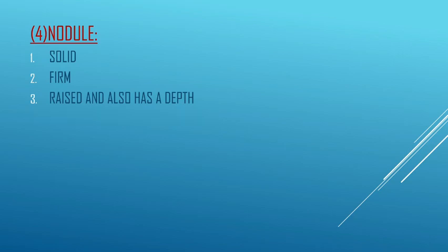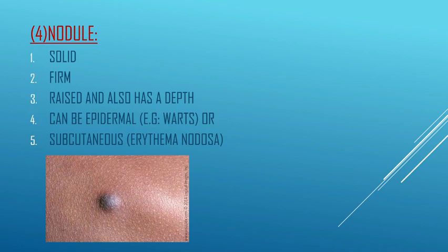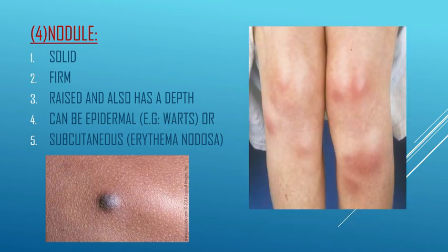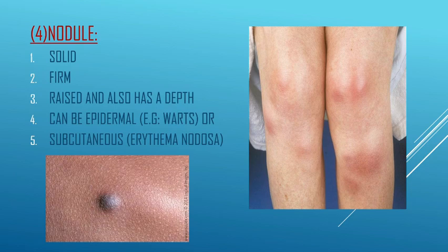Next comes the nodule. It is solid, firm, raised, and also has depth. In a papule, the lesion is only raised with no depth, but in a nodule there is depth — that is the key differentiating factor. A nodule can be epidermal, such as in warts, or subcutaneous, such as in erythema nodosum. We can determine whether the lesion has depth or not only by palpating the lesion.